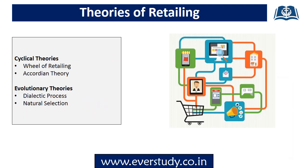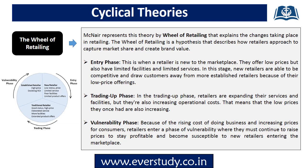Now let's discuss the theories of retailing. We will study cyclical theories and evolutionary theories. Under cyclical theories, we will study the wheel of retailing and accordion theory. Under evolutionary theories, we will study the dialectic process and natural selection.